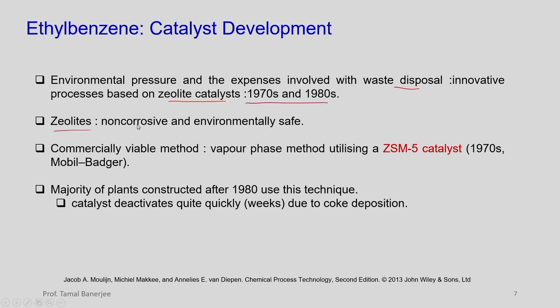A commercially viable method nowadays used has the entire alkylation in vapor phase. They utilize ZSM-5 catalyst — the 5 indicates the pore size — developed in the 1970s and still going strong by Mobil Badger. The majority of plants constructed after 1980 use this technique. The vapor phase alkylation is a solution for ethyl benzene production. But the issue is the catalyst deactivates quite quickly due to coke deposition — barely weeks — and thereafter you have to replace it.